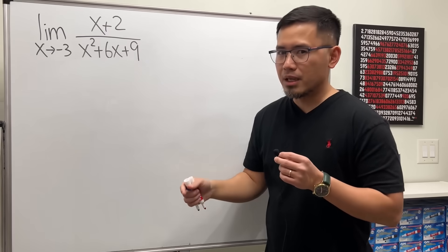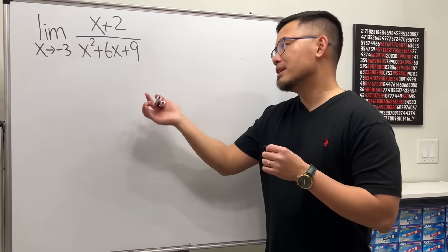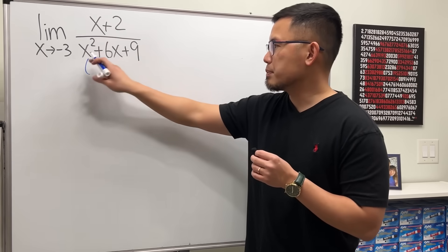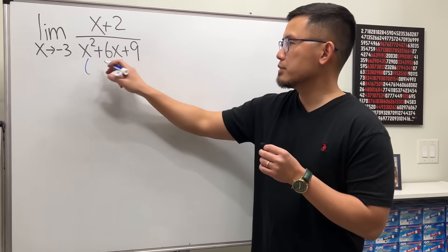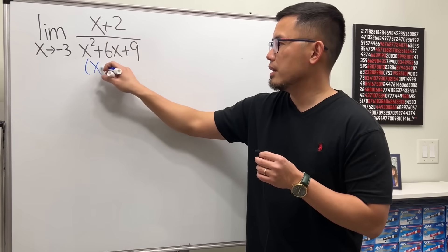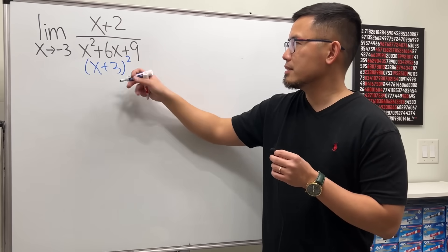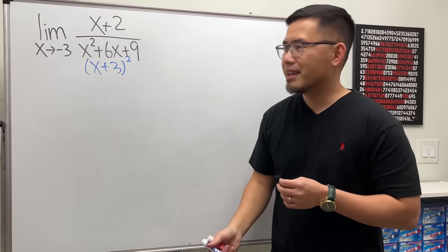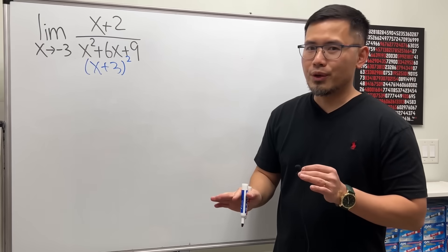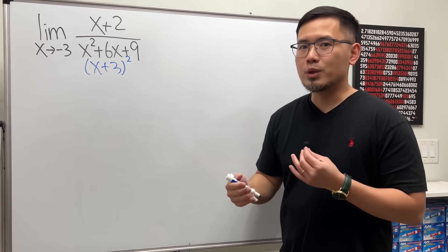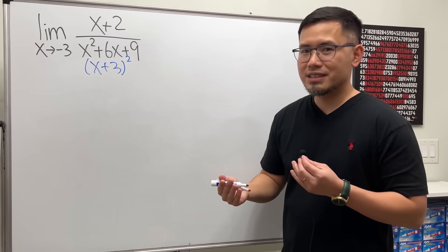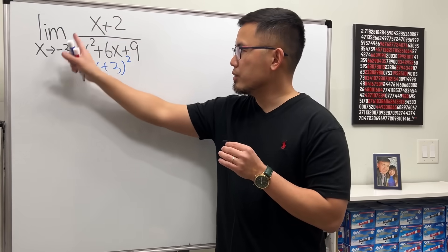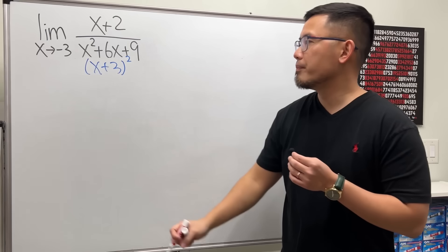The denominator can be factored. Let's go ahead and do that. We get x plus 3 times x plus 3, so x plus 3 squared. But we cannot cancel anything. Let's start with a good habit first — always plug this number into all the x's and see what happens.